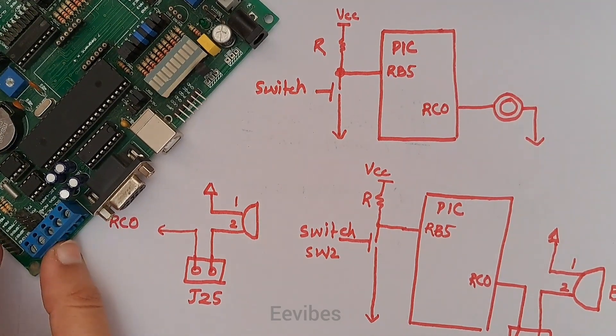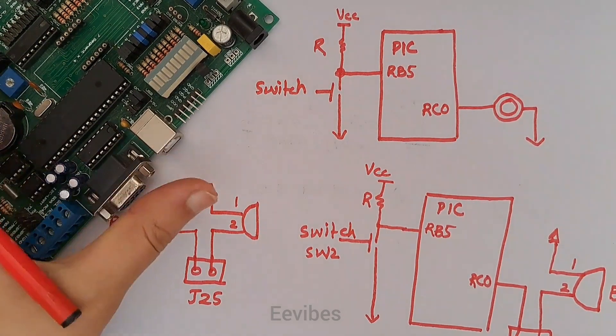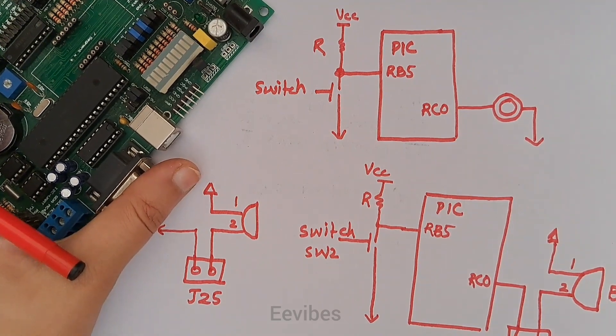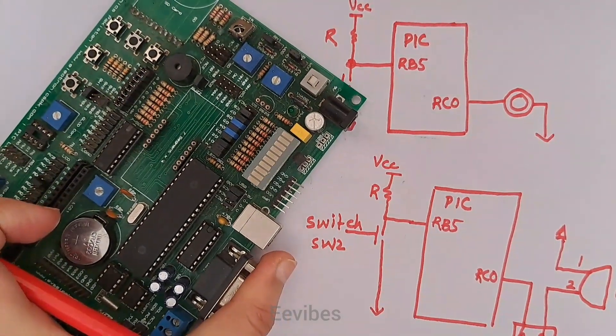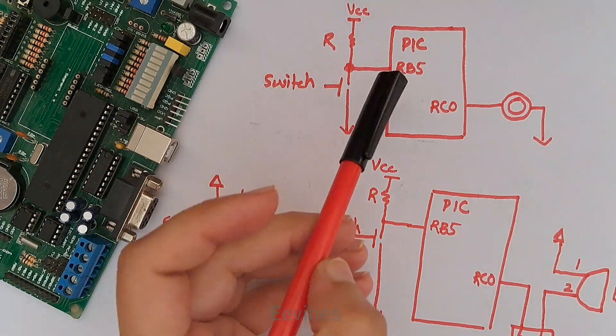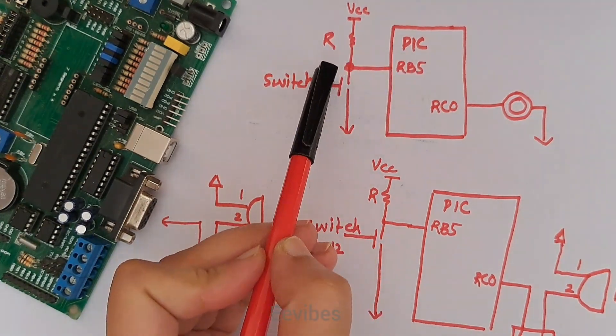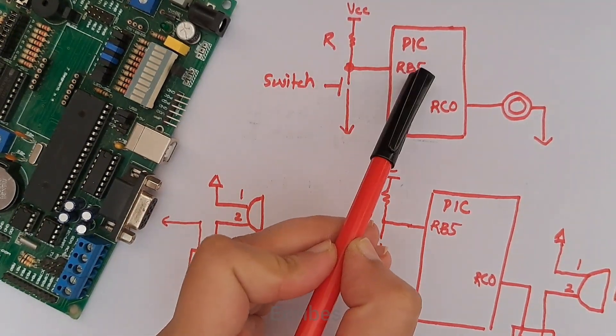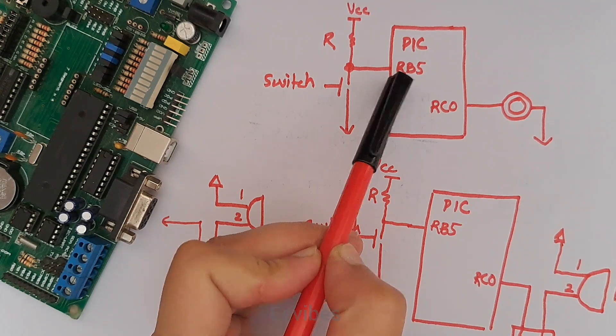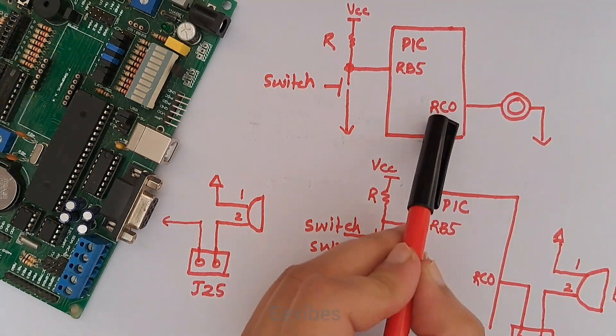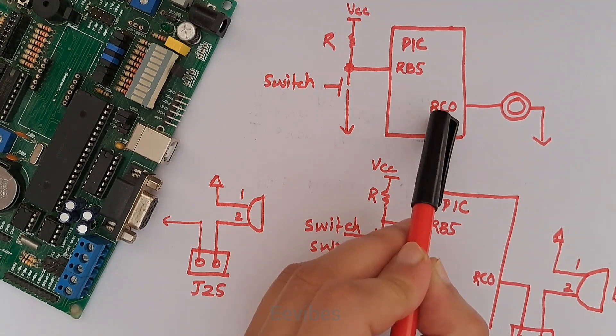Hi everyone, this is Asma Mushtaaq from AA Vibes and in this tutorial we are going to perform another experiment with this PIC development board. In this experiment, there is a switch connected at the fifth pin of port B while a buzzer is connected with the zero pin of port C.